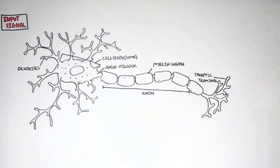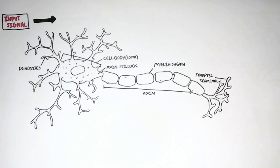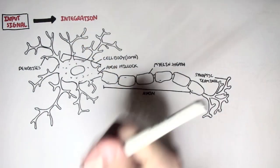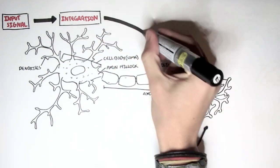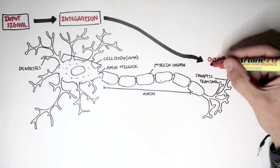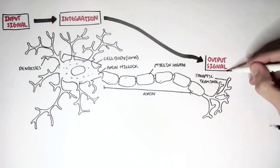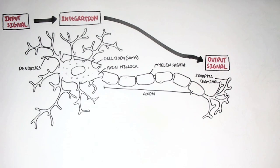So looking at it, an input signal is received by the dendrites, gets passed onto the cell body for integration, and then the output signal is released from the synaptic terminal to a target cell for a specific desired effect response.